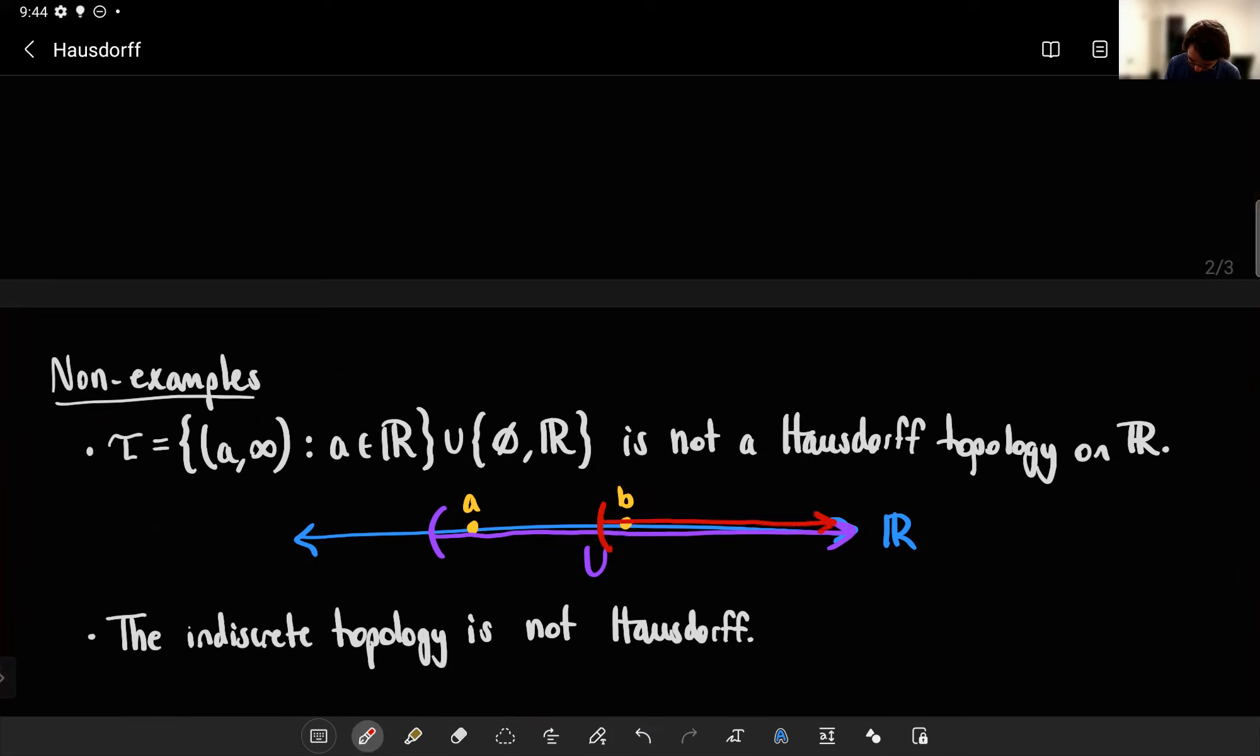I need some open set containing B. But it doesn't matter what open set I take. Any open set, say this one, call that V, is necessarily going to intersect U. Because they're both rays pointing in the same direction. So eventually they're going to cross. They're going to overlap. That happens for any pair of points A and B, for any neighborhoods or open sets containing A and B that you pick. So not Hausdorff.